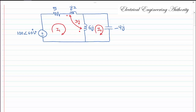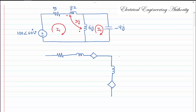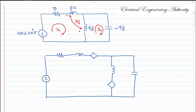In this question we have a circuit and we want to determine the phasor currents I1 and I2. I1 is the current in the left mesh and I2 is the current in the right mesh. Since we have a mutual inductance in between, we can draw the dependent sources to get rid of the dot convention. For each of these inductors we are going to have a dependent voltage source.